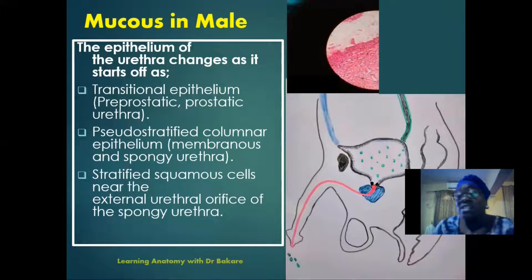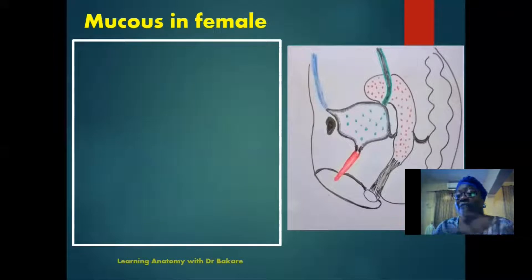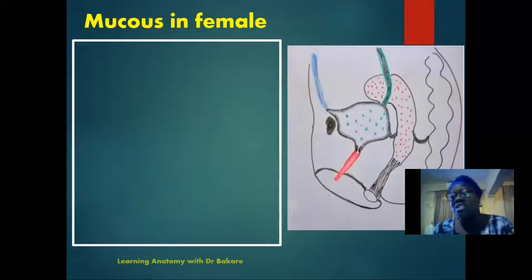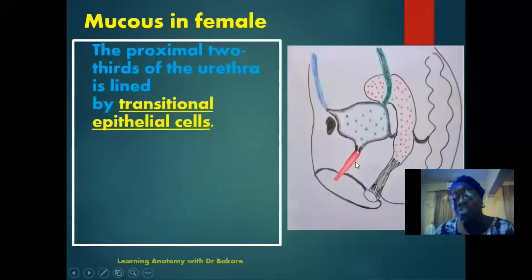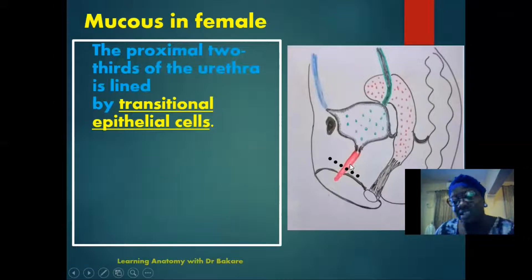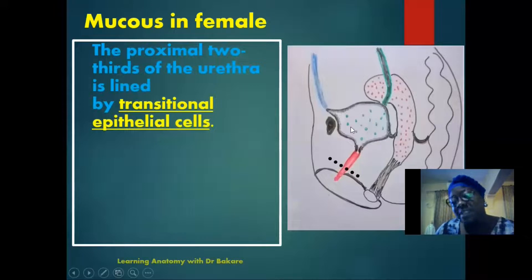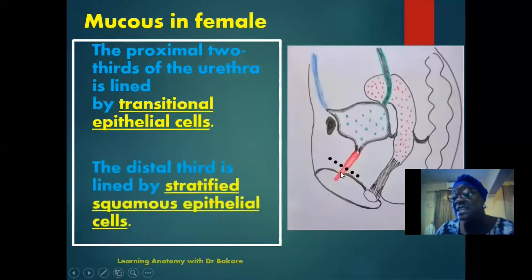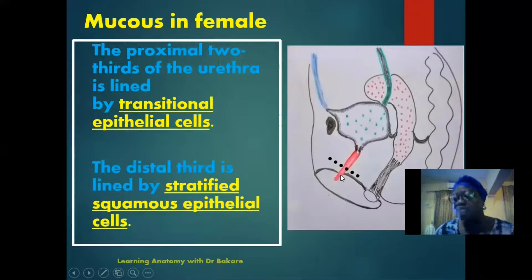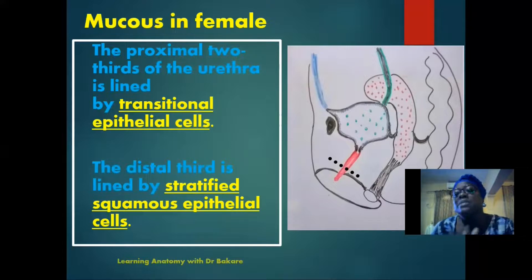For the female, the mucosal layer is somewhat similar to the male but less complicated, as the female urethra is shorter with fewer regions. The upper two-thirds of the female urethra is lined by a transitional type of epithelium, continuous with the mucosal layer of the urinary bladder. The inferior one-third is lined by a stratified squamous type of epithelium, as this region is continuous with the skin on the outside. Viewing the histological section allows you to deduce which specific region has been processed.